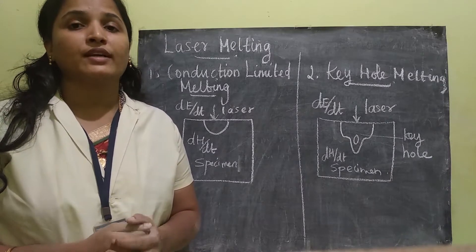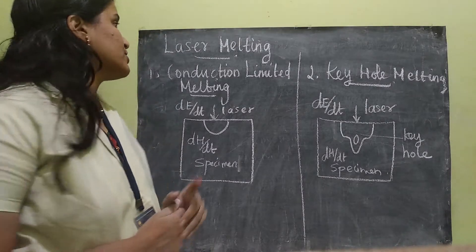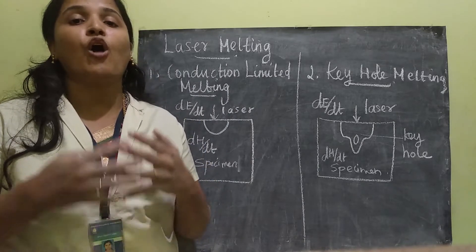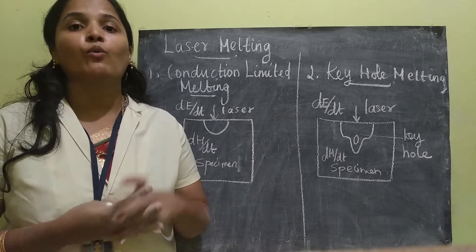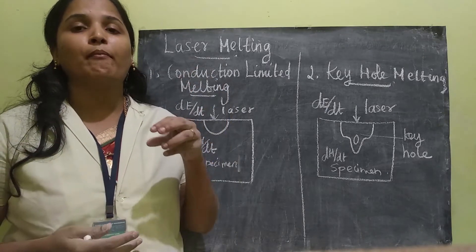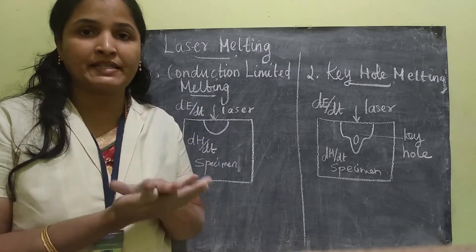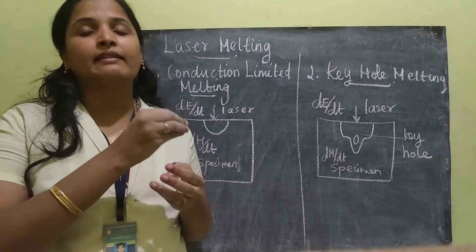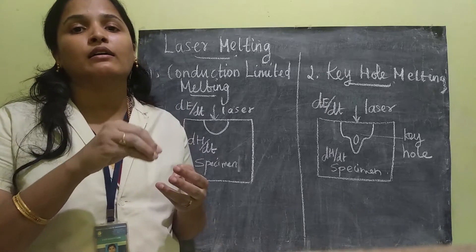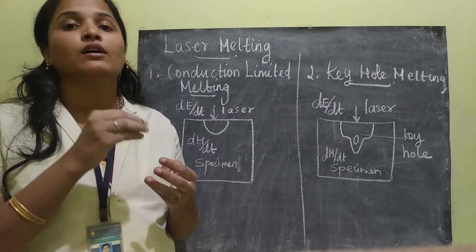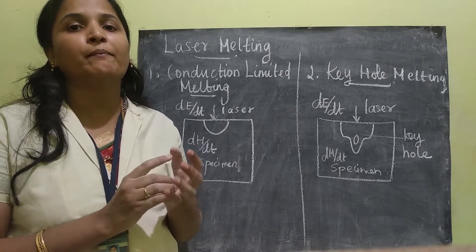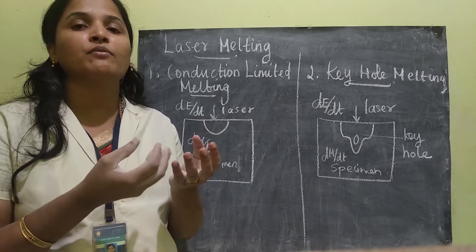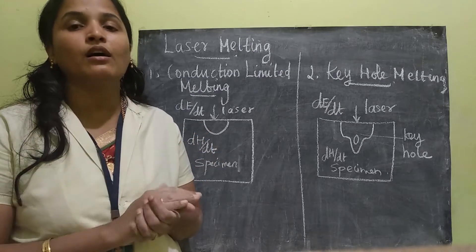Good morning students. Today I am going to teach you laser melting. So basically how melting happens? When the laser beam is allowed to fall on a material, the area surrounded by the material where the laser beam falls will be melted and it will be in the molten stage. So this is the melting.